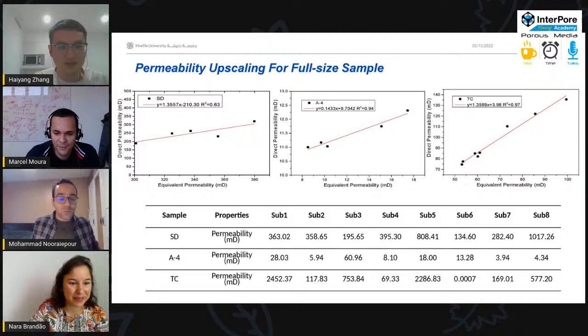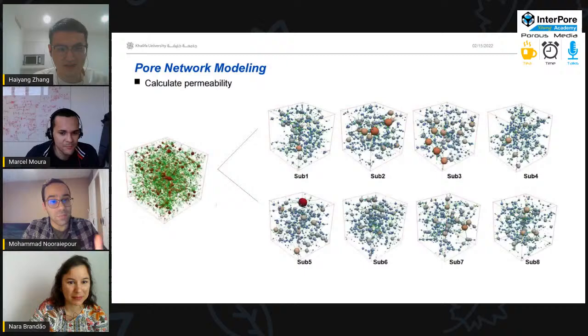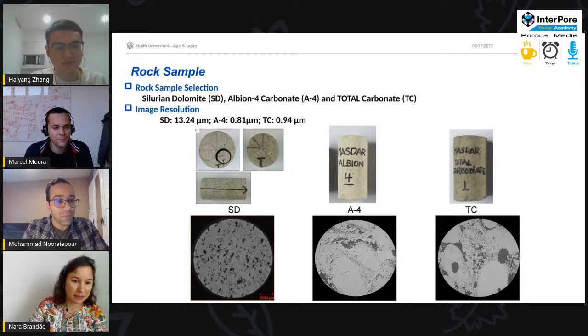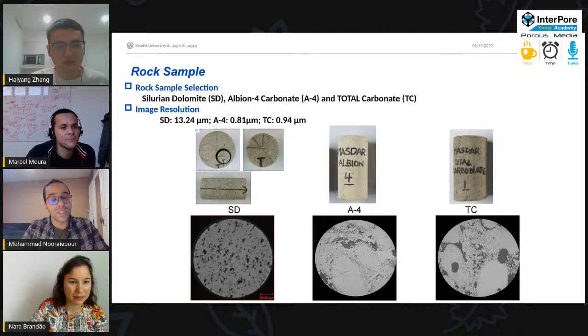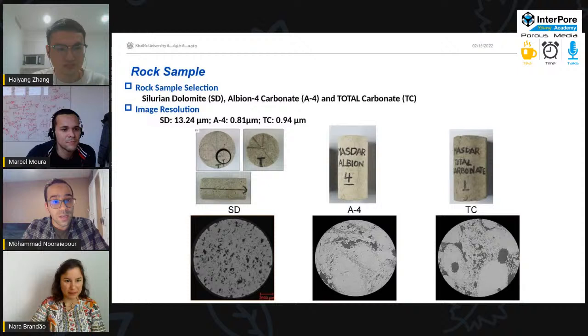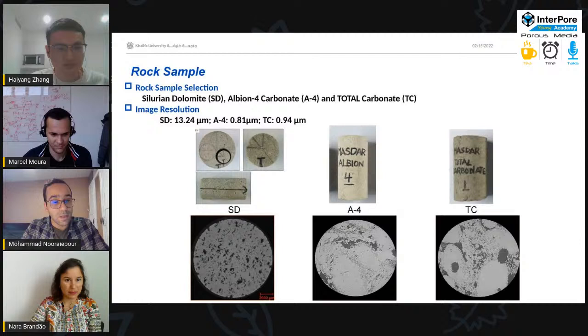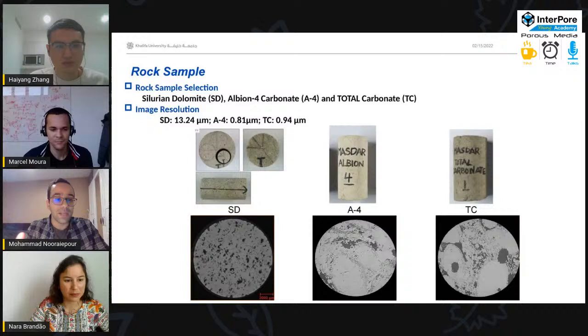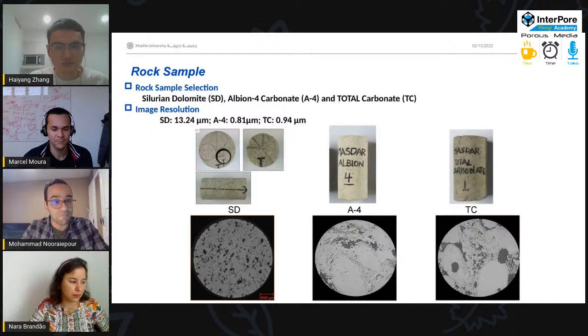Wonderful. And I have two questions of my own. The first one is about the resolution of imaging. Do you see any sensitivity when you, for example, consider submicron resolutions or you coarsen up your voxel size? Do you see any difference? And the second one, since you are working with carbonates and in carbonates, we often encounter tight rocks. Do you think the same method can be applied for the tight carbonate rocks when you have heterogeneity or anisotropy? So it means that the properties change from one place to another place. And also you have different properties in different directions. Thank you.